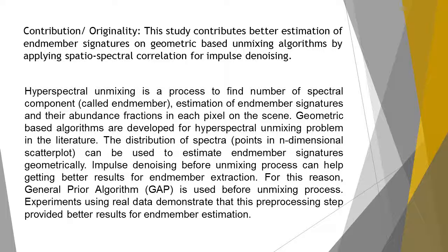Hyperspectral unmixing is a process involving a defined number of spectral components, called end-members, including estimation of end-member signatures and their abundance fractions in each pixel of the scene. Geometric-based algorithms have been developed for the hyperspectral unmixing problem in the literature. The distribution of spectral points in an n-dimensional scatterplot can be used to estimate end-member signatures geometrically.